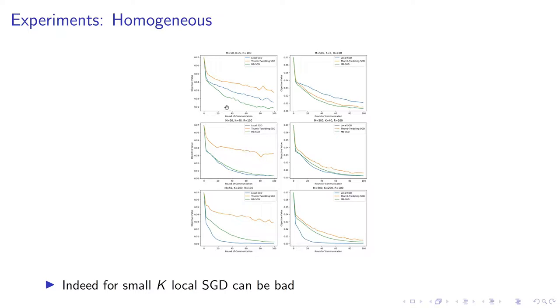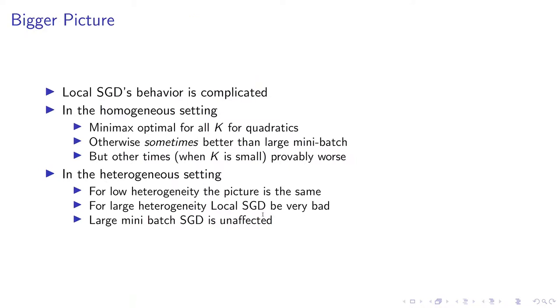Our experiments show that this is indeed the case. When K is large, local SGD is better. When K is small, local SGD can be worse than mini-batch SGD. The function used here for these experiments was actually the lower bound function. The bigger picture of this is that local SGD's behavior is much more complicated than was expected two years ago. In the homogeneous setting, it's minimax optimal. It has matching upper and lower bounds when the function is quadratic. But when the function is not quadratic, depending on the value of K, it can sometimes be better than large mini-batch, but at other times it can be worse.